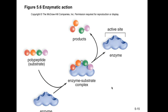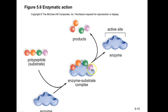For example, a polypeptide chain binds to the enzyme's active site, forming the enzyme-substrate complex. When released, the products are dipeptides. The enzyme itself is not consumed and can go back and catalyze another reaction until the right amount of product is produced.